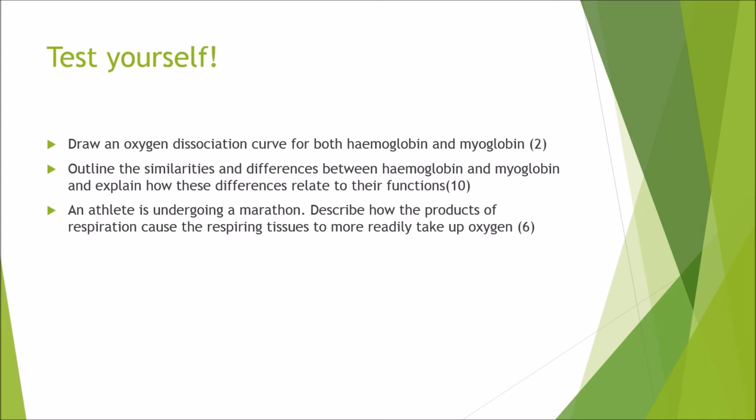That concludes the presentation. Now for the test yourself section with three questions: First, for 2 marks, draw an oxygen dissociation curve for both Hemoglobin and Myoglobin. Second, for 10 marks, outline the similarities and differences between Hemoglobin and Myoglobin and explain how these relate to their functions. Third, an athlete is running a marathon — describe how the products of respiration cause respiring tissues to more readily take up oxygen. Good luck revising!